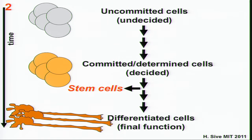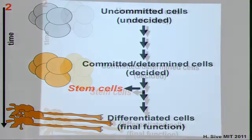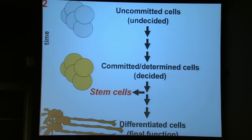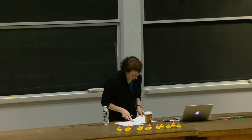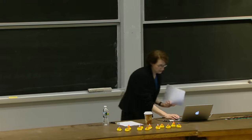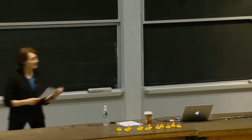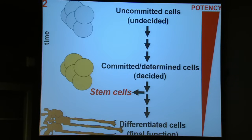We previously talked about the process by which cells decide what they're going to become and then differentiate into their final function. Stem cells fit into this litany somewhere between the commitment stage and the differentiation stage. There are multiple steps between commitment and differentiation, and somewhere along the way a group of cells with special capacities leaves this lineage and waits — partially determined — so that it can go on and make more differentiated cells when they're needed.